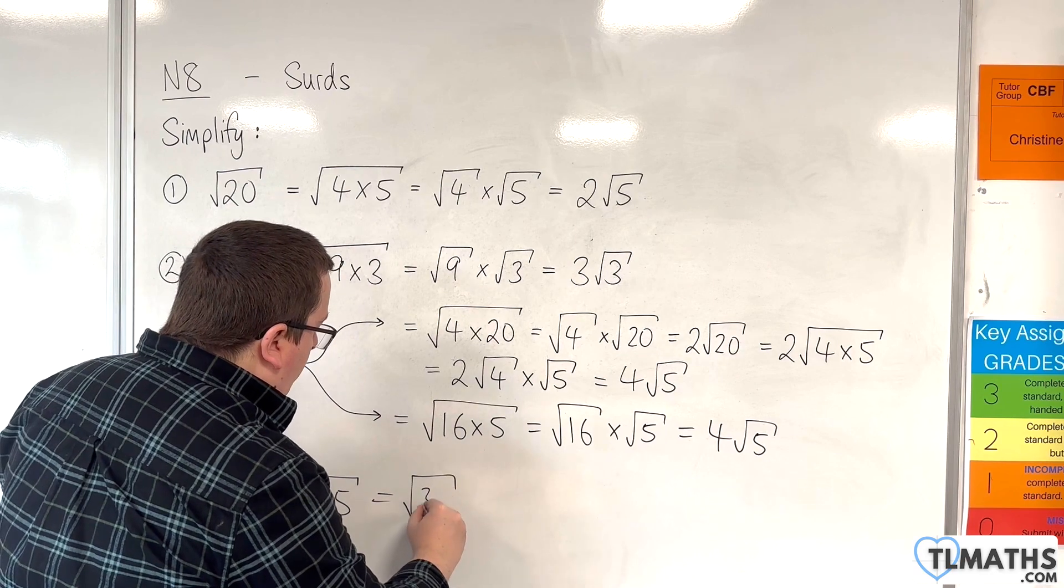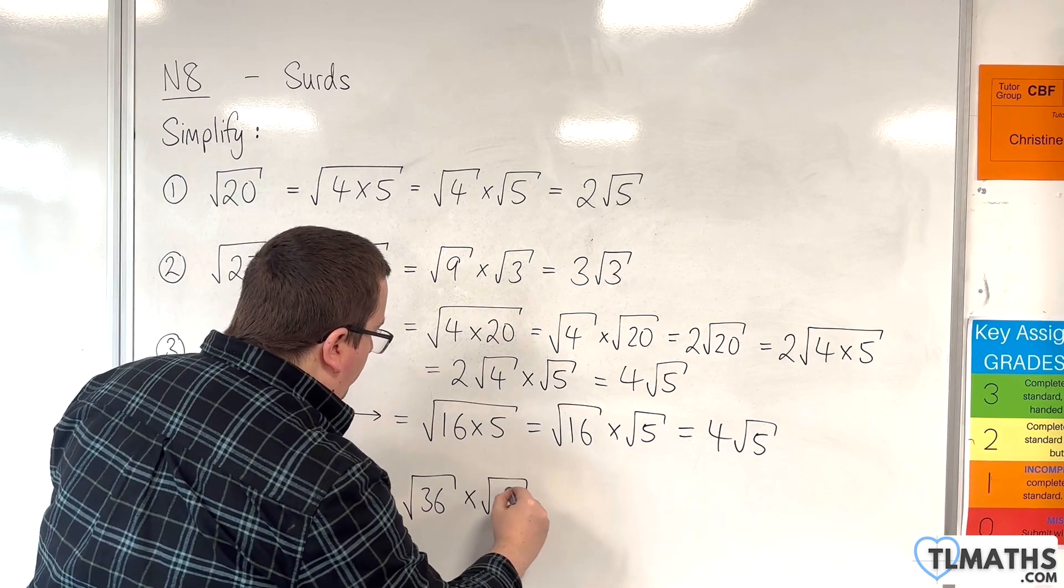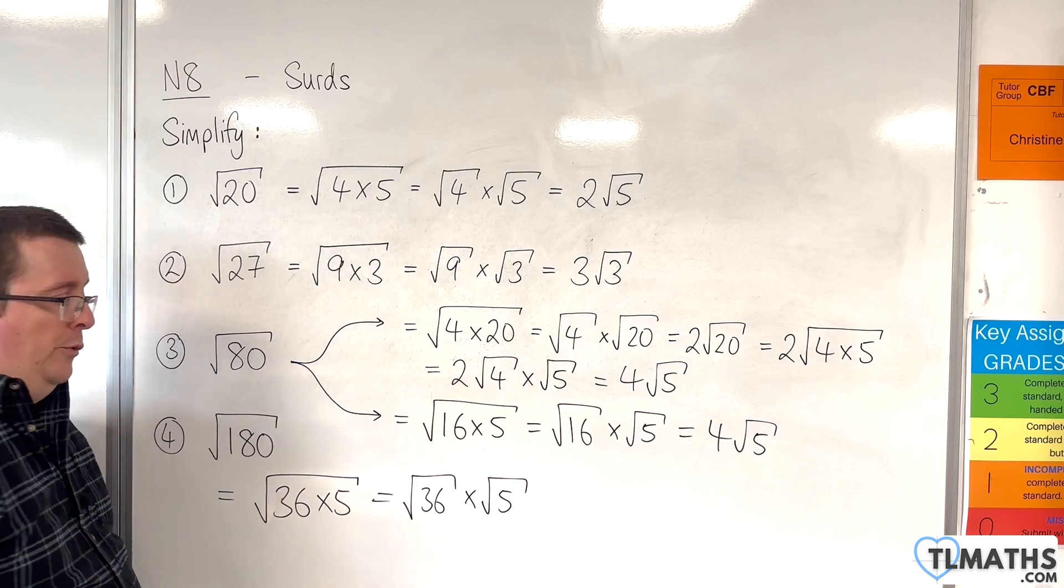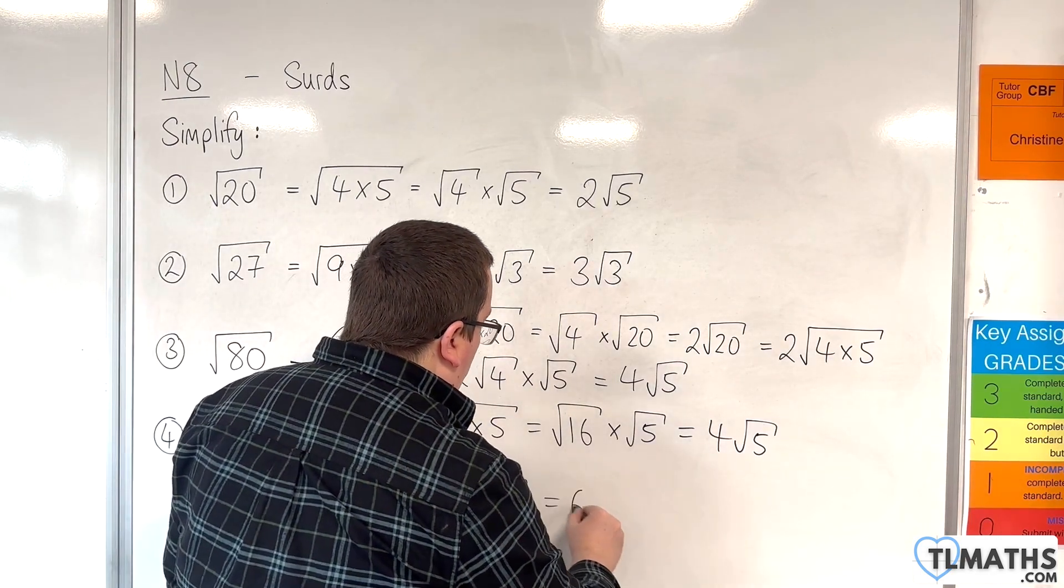So we have the square root of 36 times by the square root of 5. And the square root of 36 is, of course, 6. So this is 6 root 5.